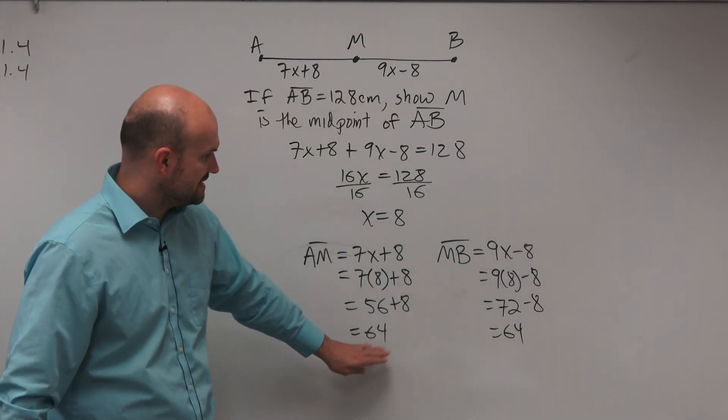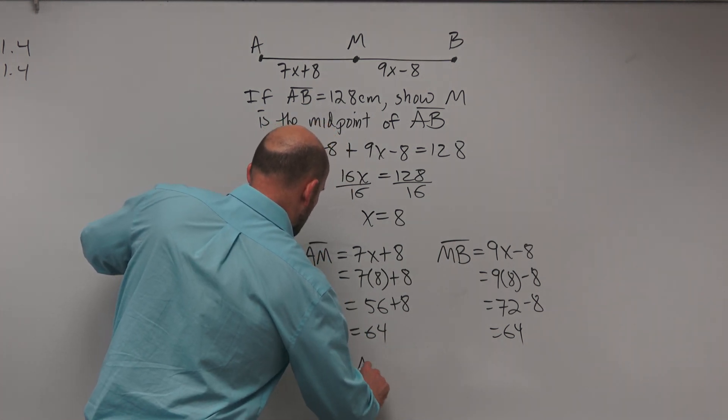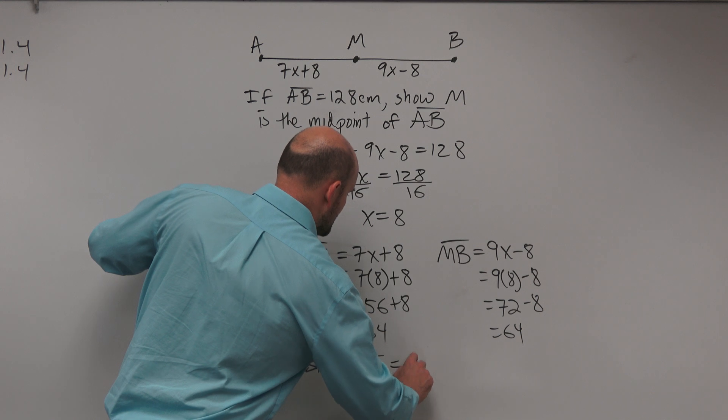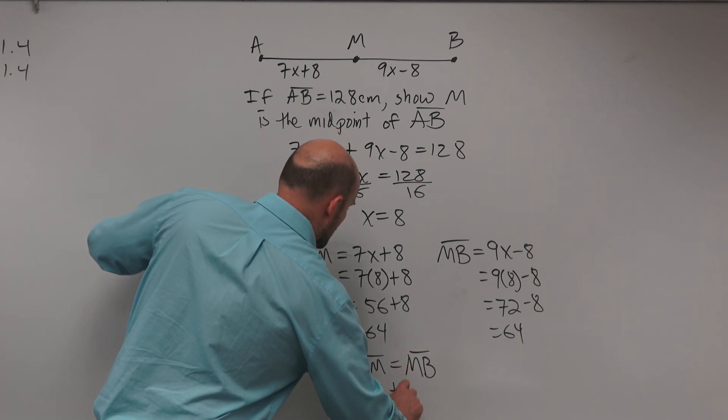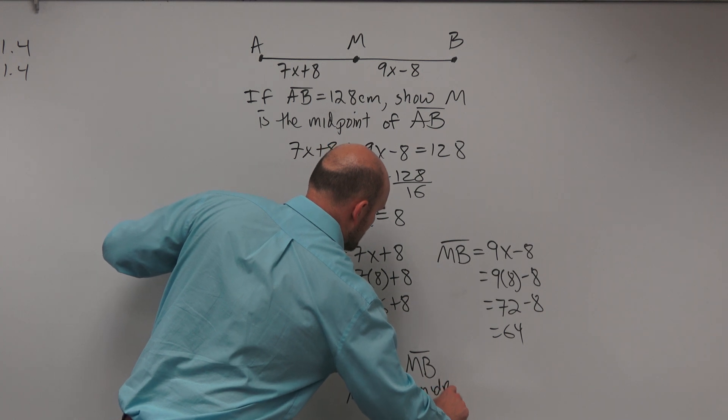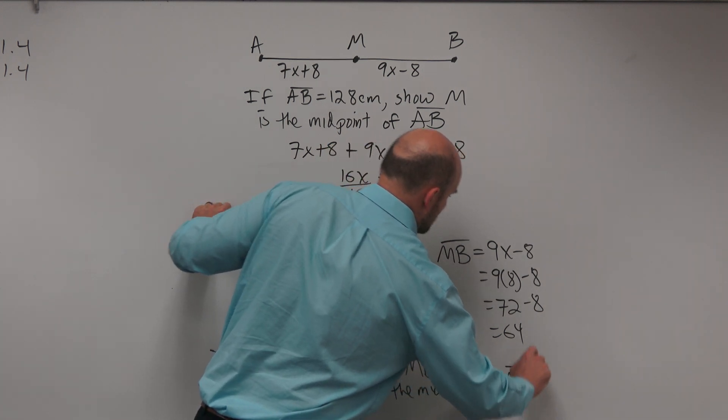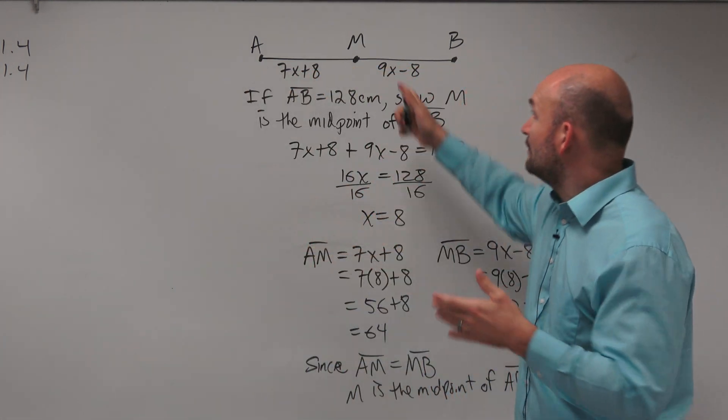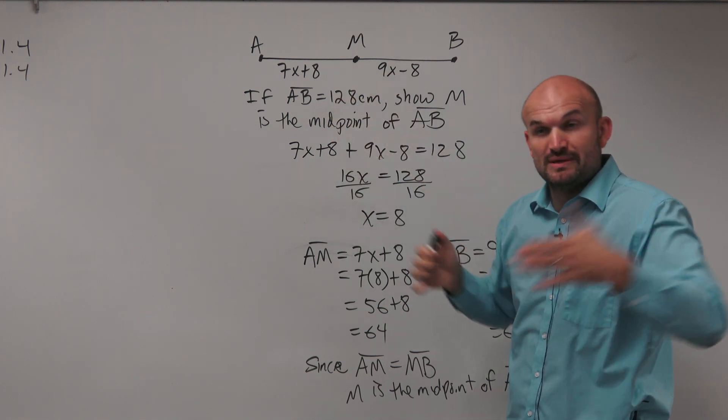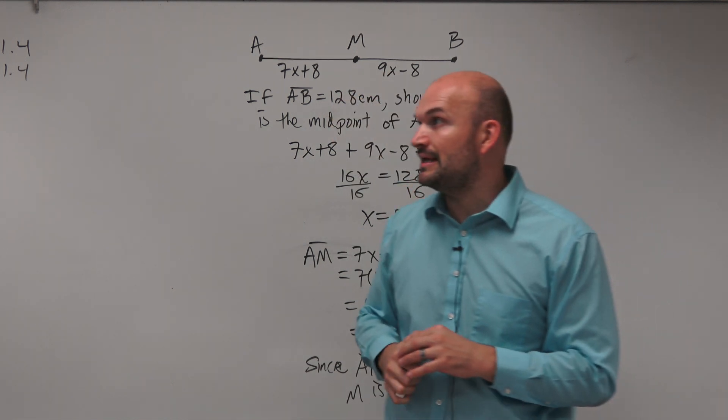Now you can see that they're both equal to each other. Since AM equals MB, M is the midpoint of AB. We can confirm this by showing that the lengths on either side of M to each endpoint are the same.